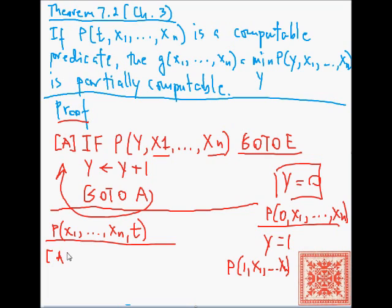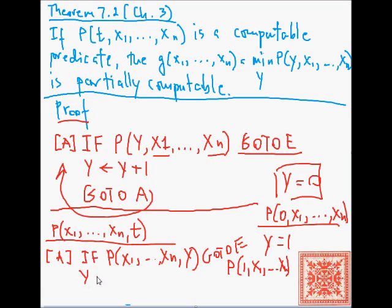Here we can put a t in the last place. It's just a positional argument. There's nothing magic about it. The code for our program will change, and it will read as if P(x1, ..., xn, y) is true, then go to e, increment y by one, and then go to a. So that shows that g of x is partially computable.